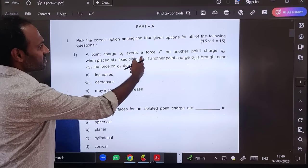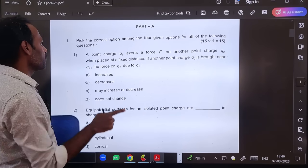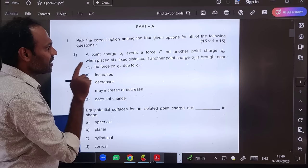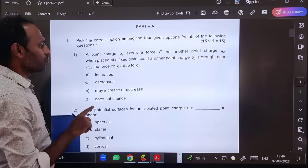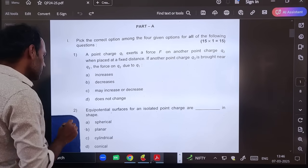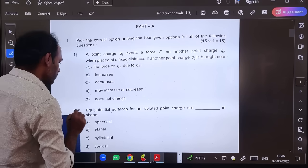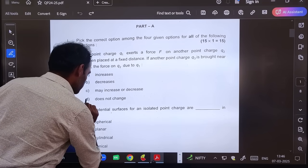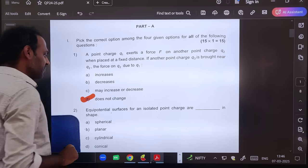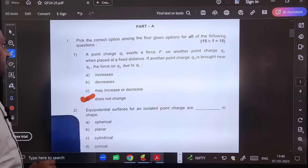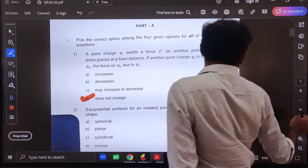First question: A point charge Q1 exerts a force F on another point charge Q2 when placed at a fixed distance. If another point charge Q3 is brought near Q2, the force on Q2 due to Q1 will not change. This is by the concept of superposition, by the principle of superposition. The right answer is does not depend. It does not change. The correct answer is option D.